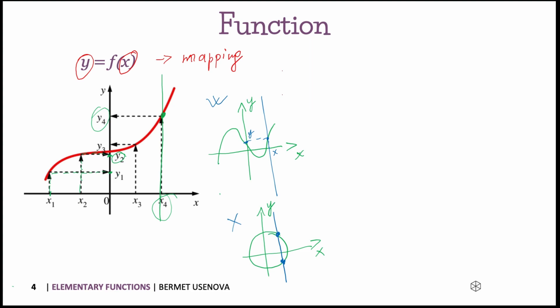So if you want to check whether the graph that you're looking at is a function or not, you can draw the vertical bar everywhere. And if it intersects in more than one point, it's also not a function.